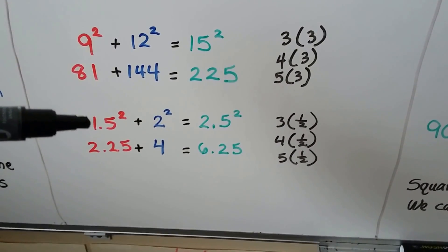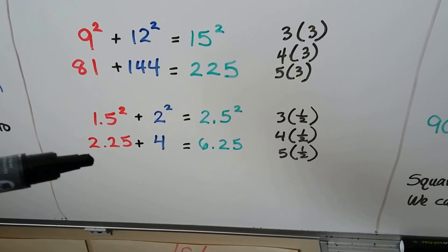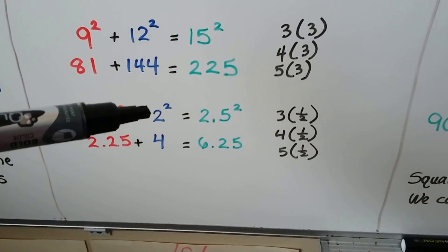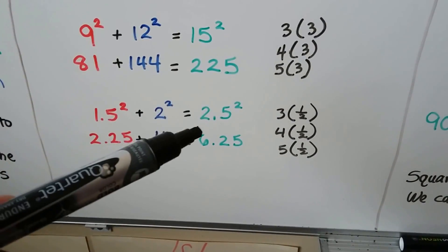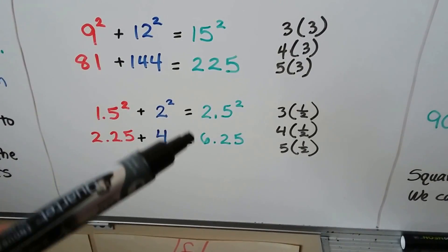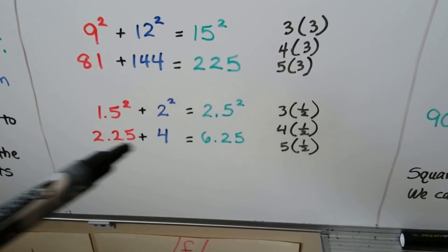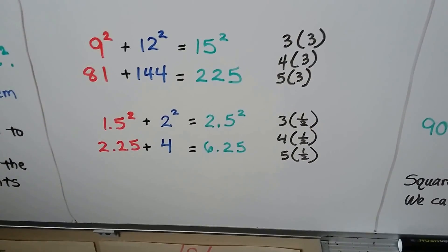So, we'd have 1.5 times 1.5, which equals 2.25. And 2 times 2 is 4. And it'll equal 2.5 times 2.5, which is 6.25. And we add these two together, and yeah, it does equal 6.25.